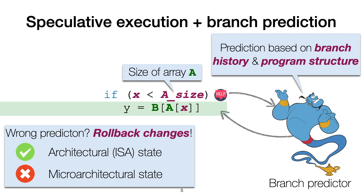In more detail, changes to the CPU architectural state, which contains the registers and memory, are rolled back. However, changes to the so-called microarchitectural state, like caches, are not rolled back.